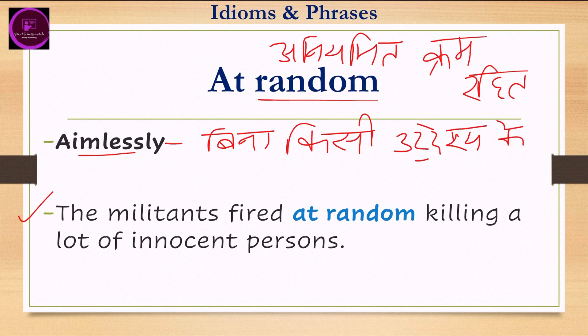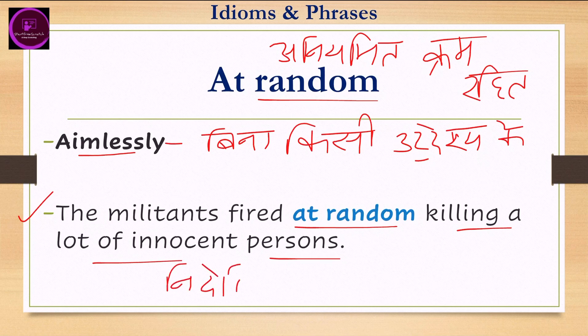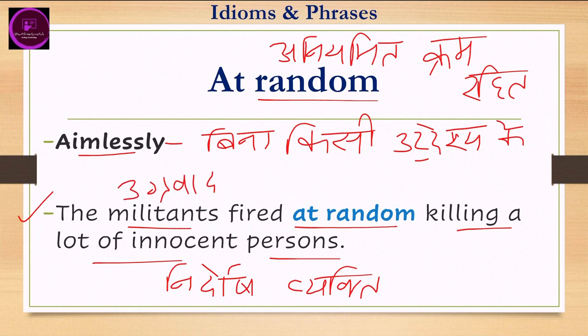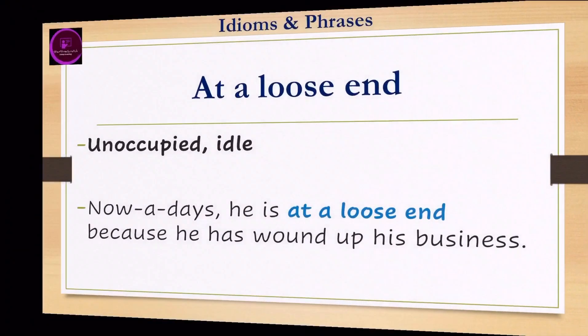Let's look at an example: 'The militant fired at random, killing a lot of innocent persons.' Innocent person means 'nirdosh vyakti.' Militants are 'ugrwadi' — those who have taken up weapons. So the meaning here is: the militant fired aimlessly, without thinking, or without any purpose, killing many innocent persons.